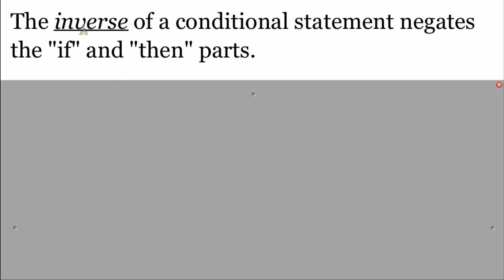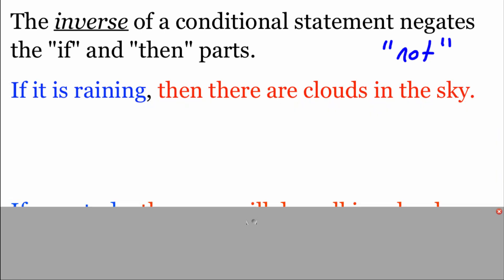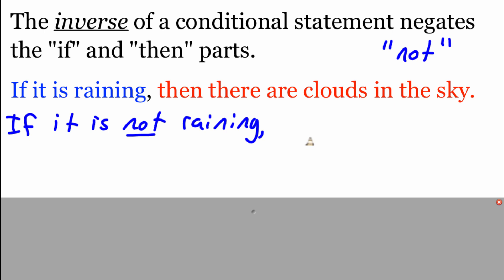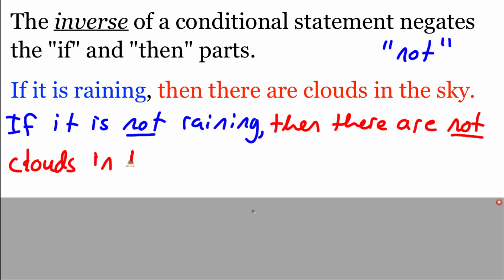The next thing we can write out is called the inverse of a conditional statement. What that does is it negates the if-and-then pieces of our statement. Remember, to negate something, one of the easiest ways is to put a 'not' in the statement. So looking at this first one: 'If it is raining, then there are clouds in the sky.' We're not going to change the order — we're just going to negate it. So: 'If it is not raining, then there are not clouds in the sky.' That's the inverse of the original statement.